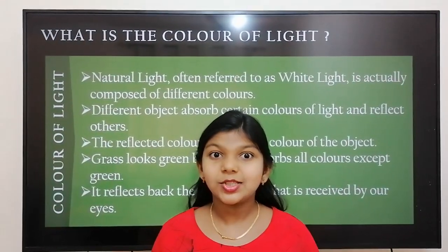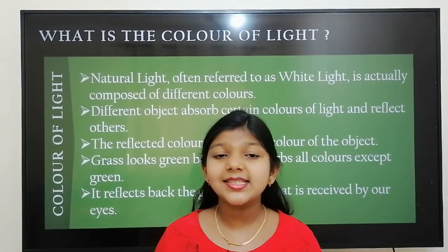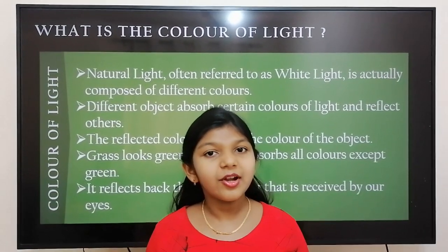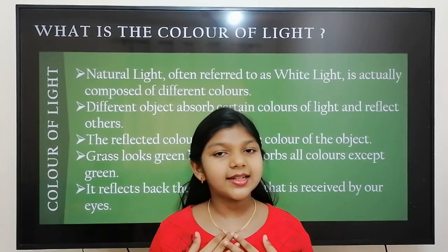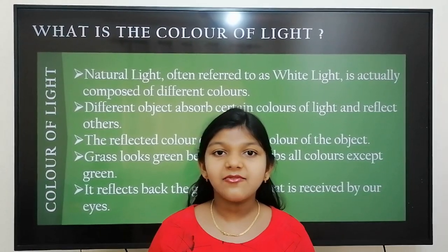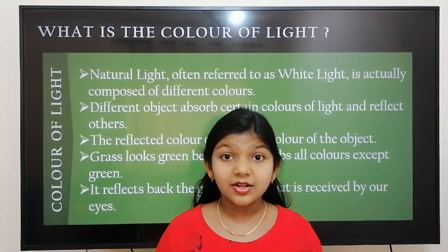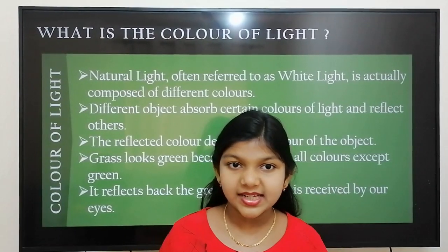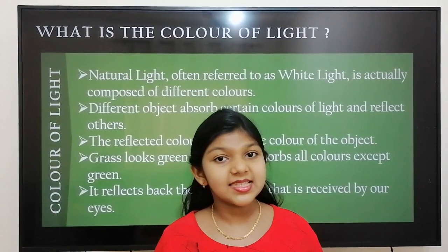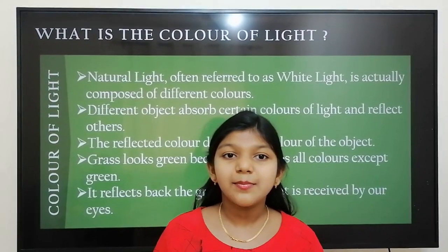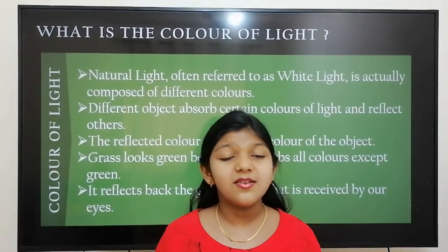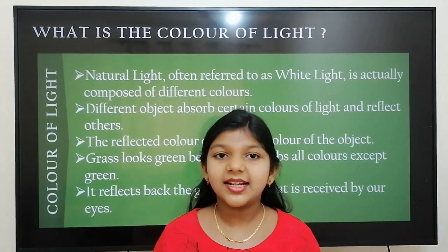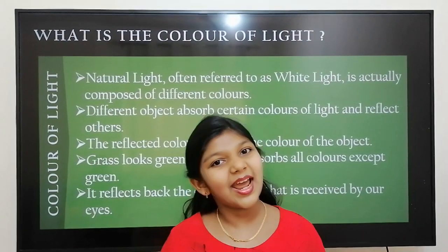Do you know what is the color of light? Natural light, often referred to as white light, is composed of different colors. Different objects absorb certain colors and reflect back others — the reflected color decides the color of the object. For example, grass looks green because it absorbs all colors except green; it reflects back the green color that is received by our eyes.